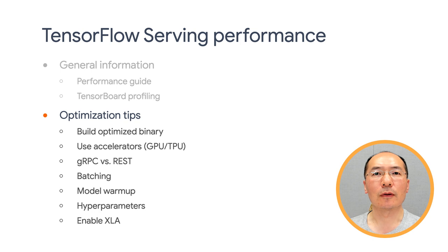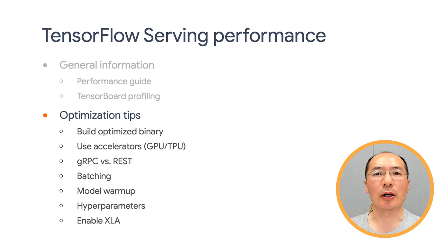TF Serving is an online serving system for machine learning models. As with many other online serving systems, its primary performance objective is to maximize throughput while keeping tail latency below certain bounds. TensorFlow Serving uses the TensorFlow runtime to do the actual inference on your requests. Where TF Serving shines is keeping the tail latency down for many clients querying many different models, while efficiently utilizing the underlying hardware to maximize throughput.